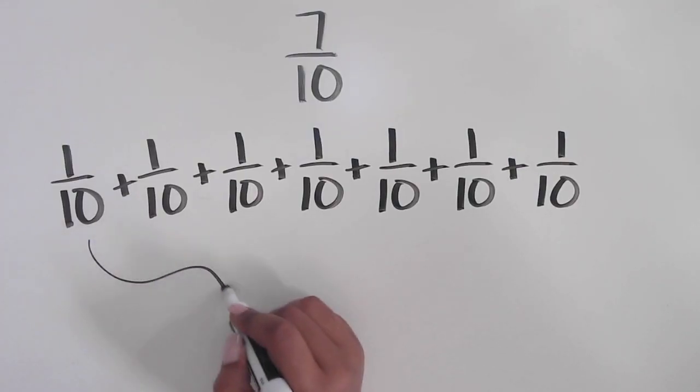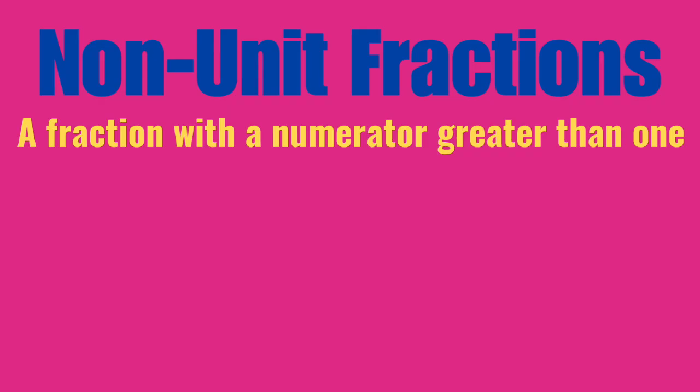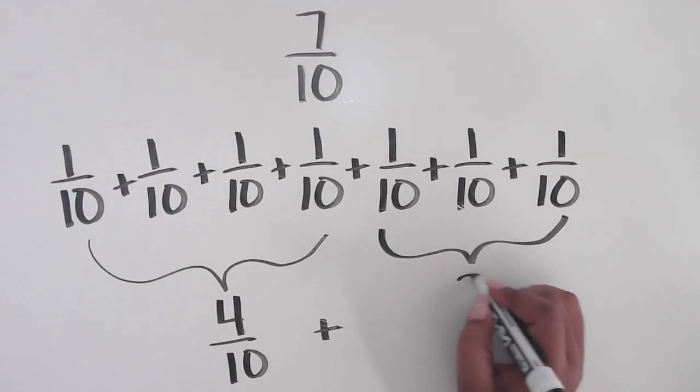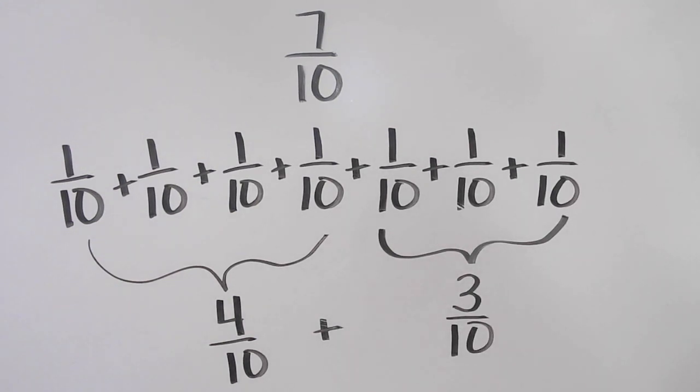Next, you can connect these unit fractions to non-unit fractions, which are any fractions with a numerator greater than 1. The 1 tenths can be combined in different ways to represent 7 tenths. One way being 4 tenths plus 3 tenths.